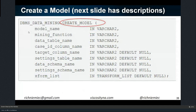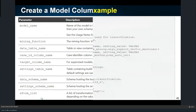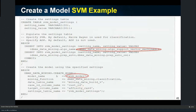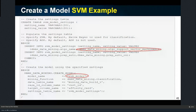To create the model, I give it a name, specify the function it's doing, point it to a certain table based on a certain column, and use a settings table where the algorithm is stored. Here's an example: creating a model named with a classification function, going after a table called data_build_v by customer ID, finding out if they will buy an affinity card — a credit card with a sports team logo. The settings table is where the algorithm is assigned — in this case, support vector machine.